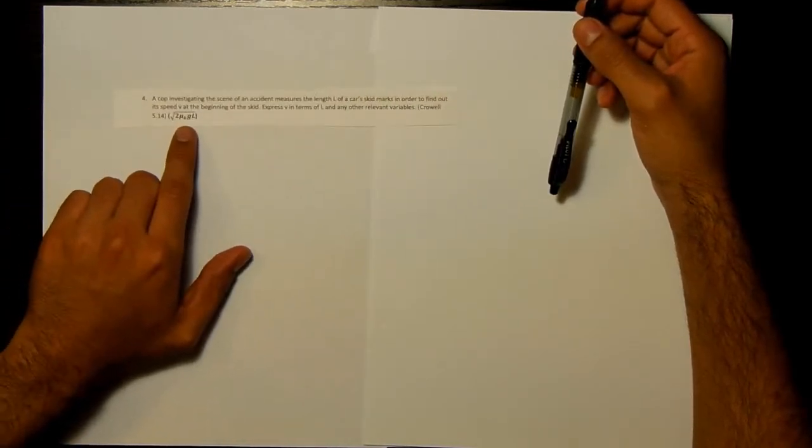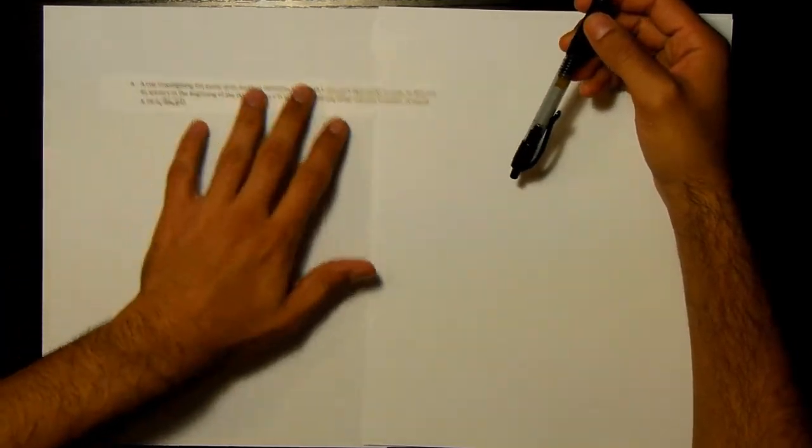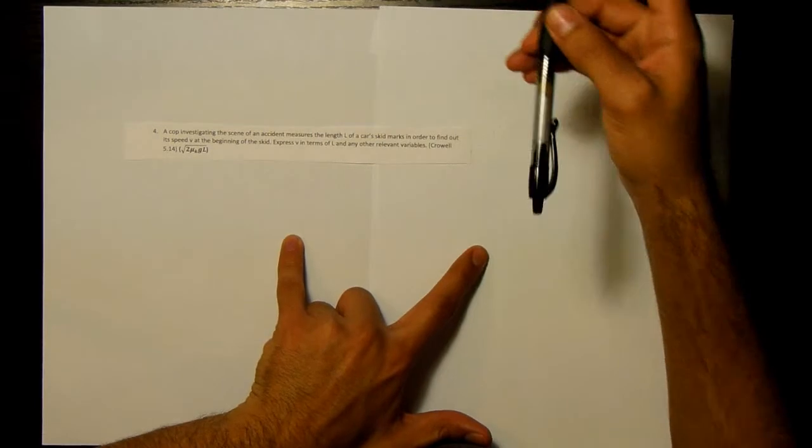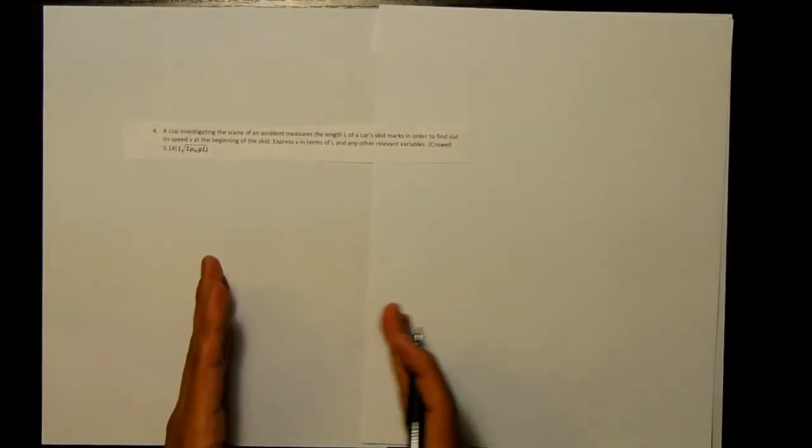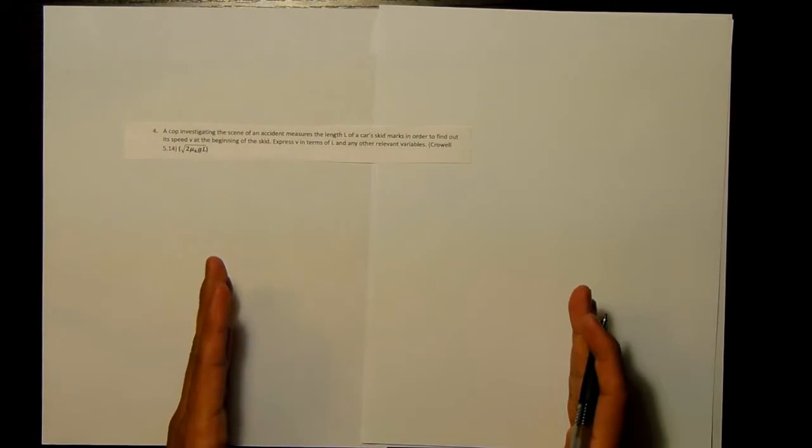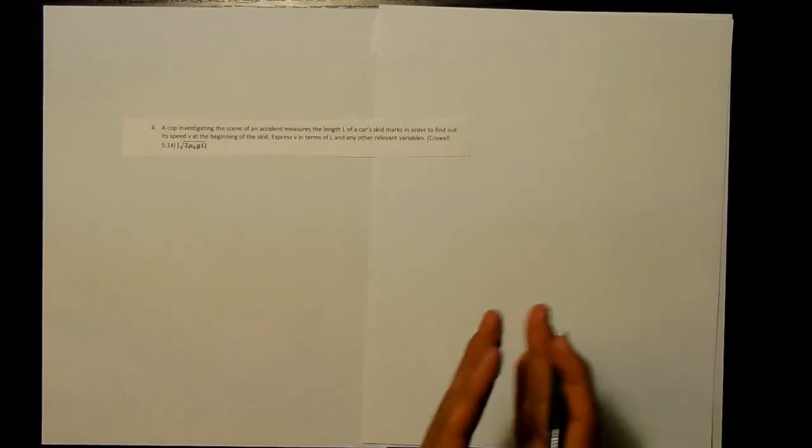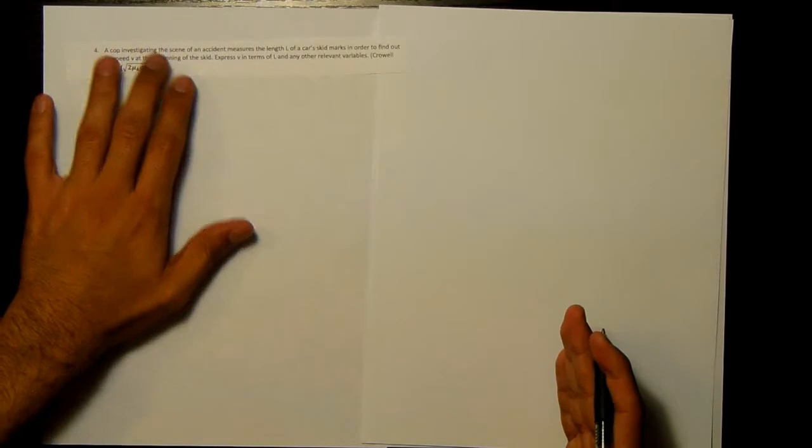And the answer ends up being in symbols. So there's no numbers that are given, but we do know that, or we're going to pretend like we know what L is, the length that it takes for, there's a skid mark, so that's how long it takes the car to stop, how far it takes the car to stop. And we want to know the initial velocity that it's going at. Now we can assume because it stops at the end of that part, at the end of L, then the final velocity is going to be zero.